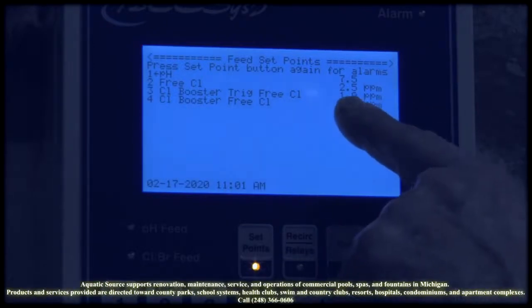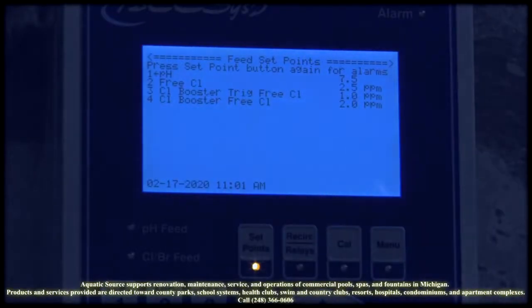We also have a trigger point for booster. If for some reason the salt generator that's making chlorine in the pool drops too low for parts per million, it will automatically turn on a Stenner pump with a liquid chlorine vat to boost the chlorine level and maintain, especially if you have a heavy bather load from a meet or a large meet over the weekend where you're going nonstop all day.